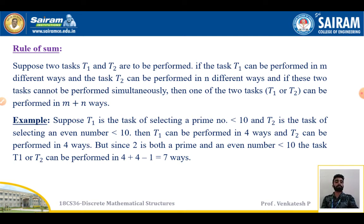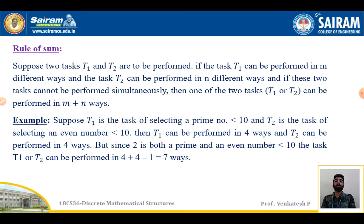Example: Suppose T1 is a task of selecting a prime number less than 10, and T2 is a task of selecting an even number less than 10. Then T1 can be performed in 4 ways because there are only 4 prime numbers less than 10, and T2 can be performed in 4 ways. But 2 is both prime and even, so task T1 or T2 can be performed in 4 plus 4 minus 1, which equals 7 ways.